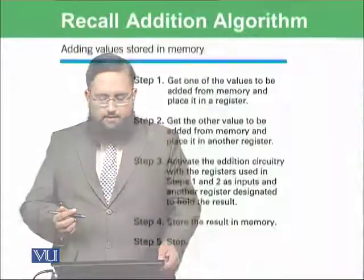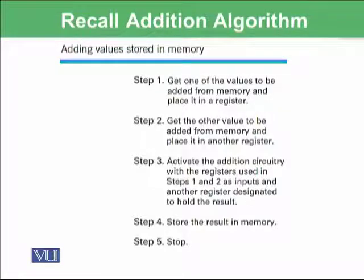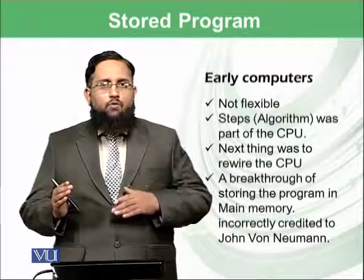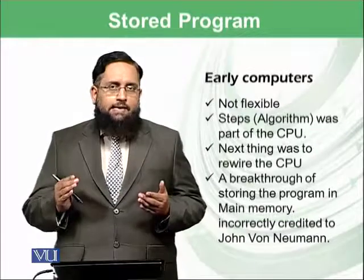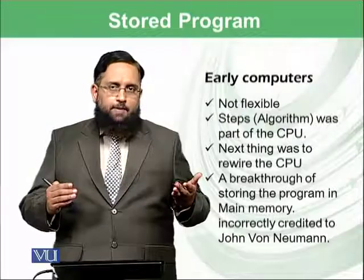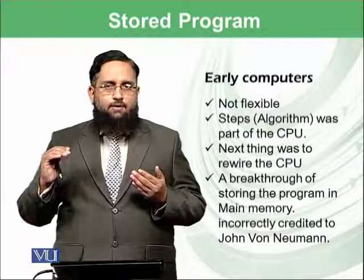For example, we learned about an algorithm in our previous module that adds two numbers. If the initial computers had such an algorithm built within the CPU, this means that only one computer built by a scientist could only perform addition. If we want to subtract numbers, we need another computer. If we want to multiply numbers, we need another computer, because we did not save that program somewhere else in the computer.